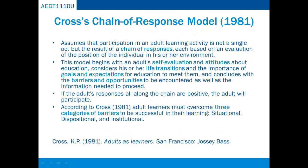Cross's Chain of Response Model assumes that participation in an adult learning activity is not a single act, but the result of a chain of responses, each based on an evaluation of the position of the individual in his or her environment. This model begins with an adult's self-evaluation and attitudes about education, considers his or her life transitions and the importance of goals and expectations for education to meet them, and concludes with the barriers and opportunities to be encountered, as well as the information needed to proceed. If the adult's responses all along the chain are positive, the adult will participate.